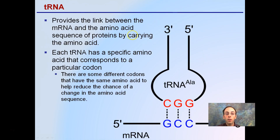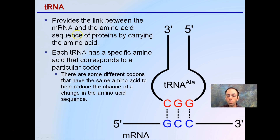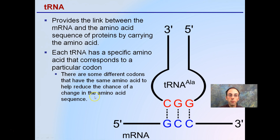tRNA provides a link between the mRNA and the amino acid sequence of proteins by carrying the amino acid. Down here is our anticodon, here's our tRNA, and our amino acid will be linked up at the top. Each tRNA has a specific amino acid that corresponds to a particular codon. However, there are some different codons that have the same amino acid, to help reduce the chance of change in the amino acid sequence — there are redundancies built in.